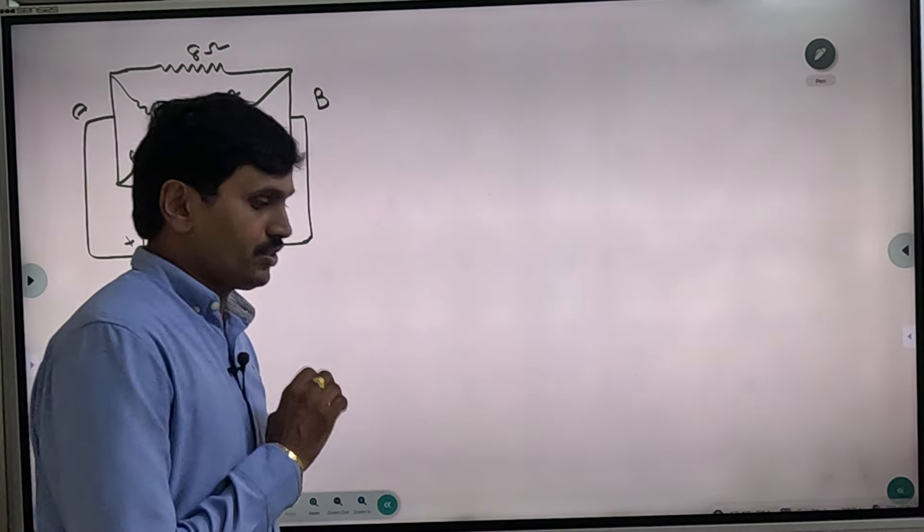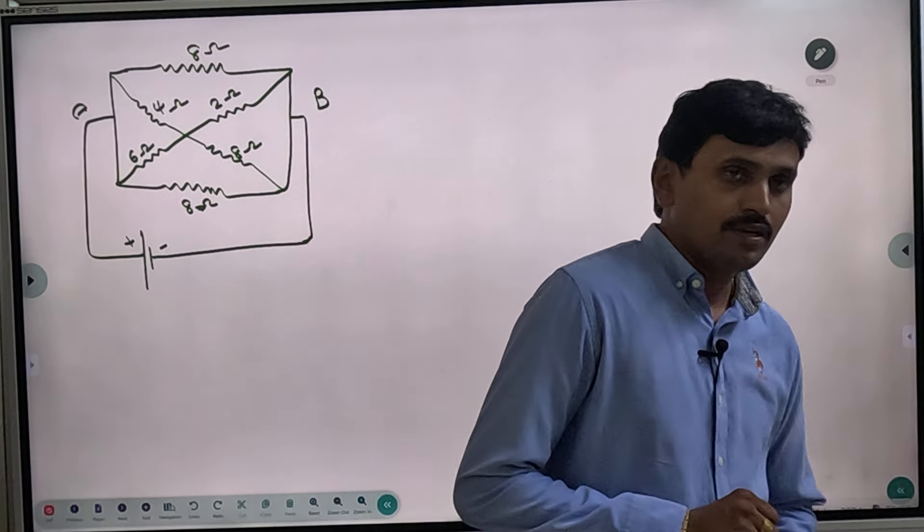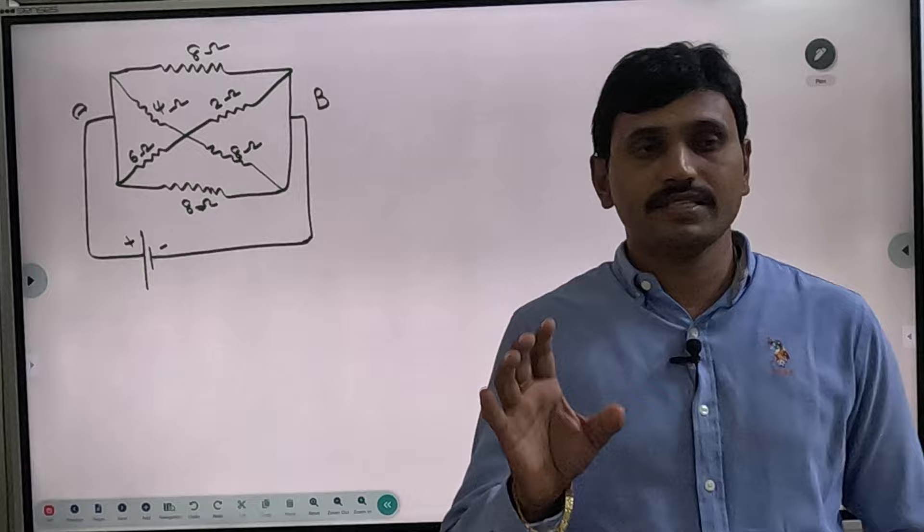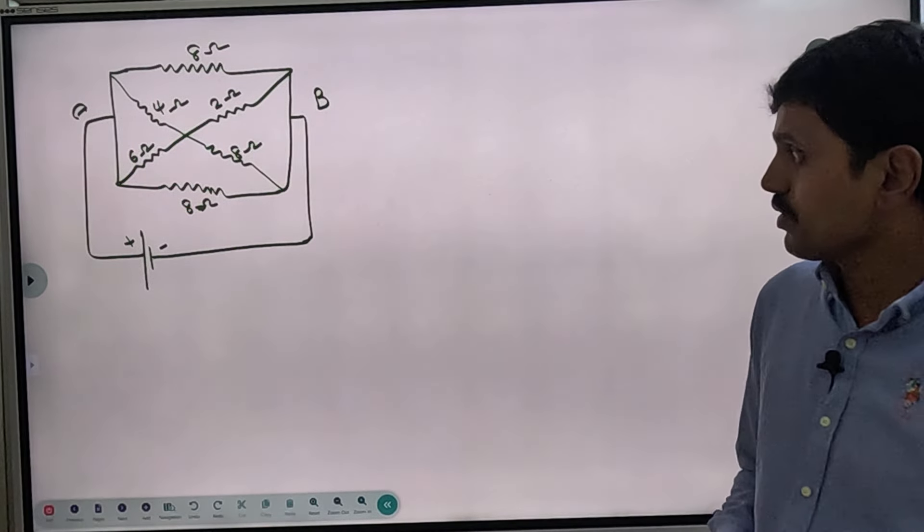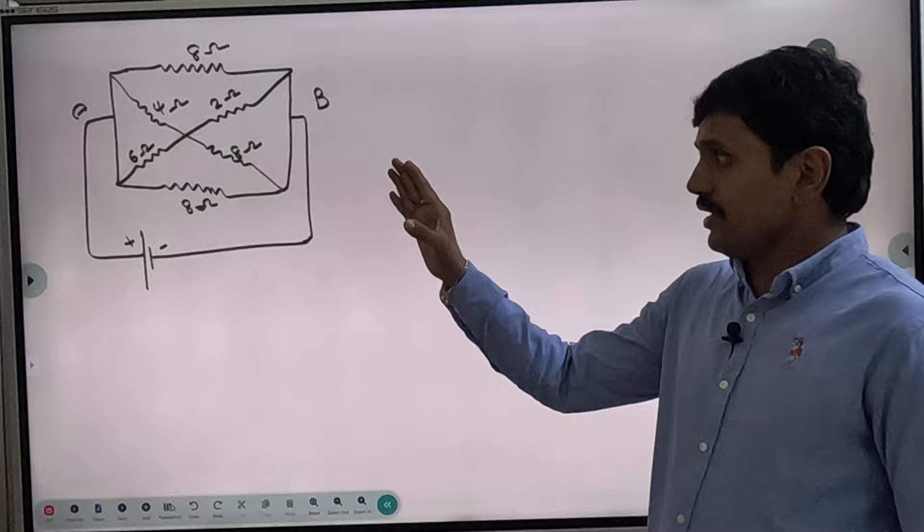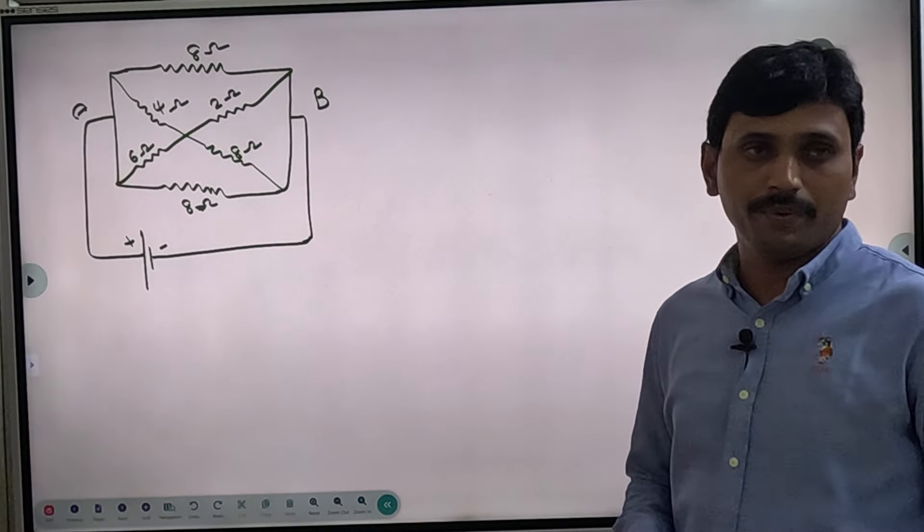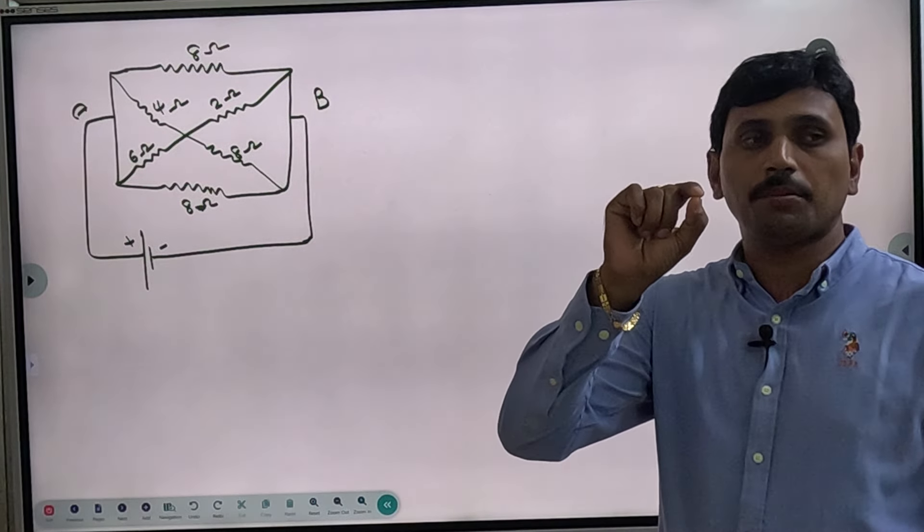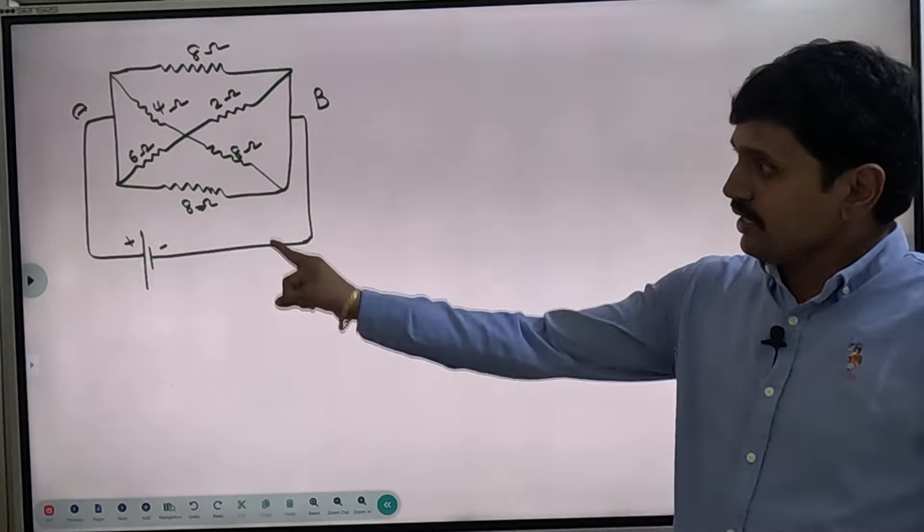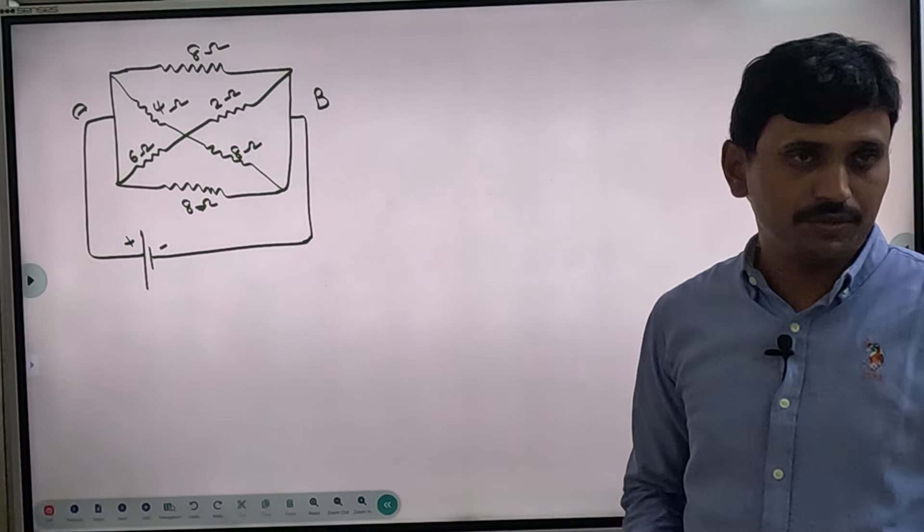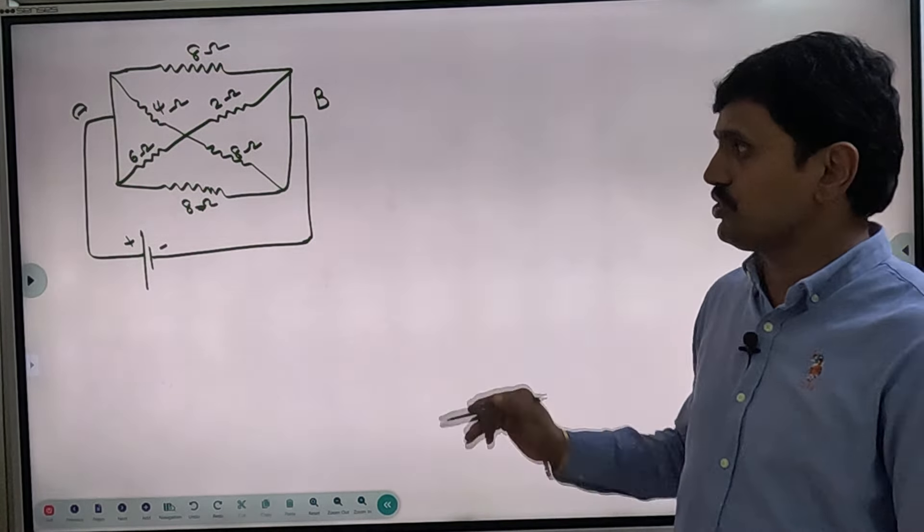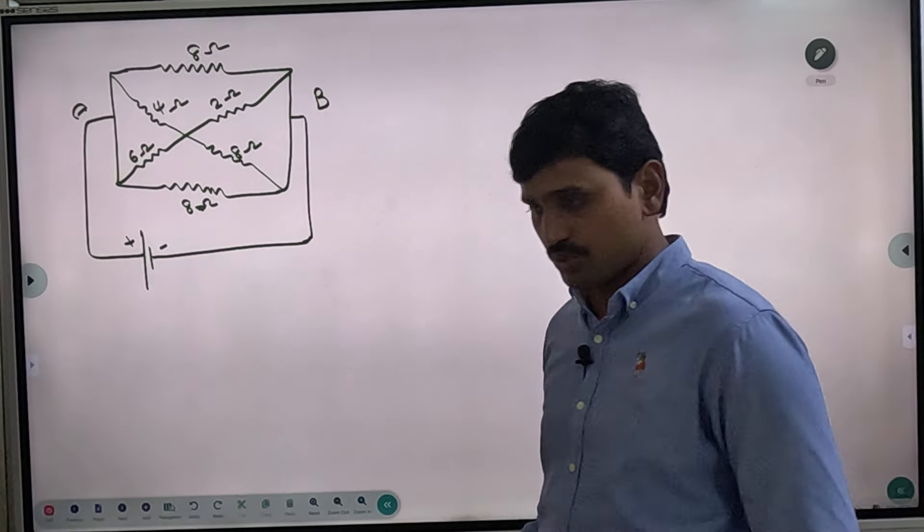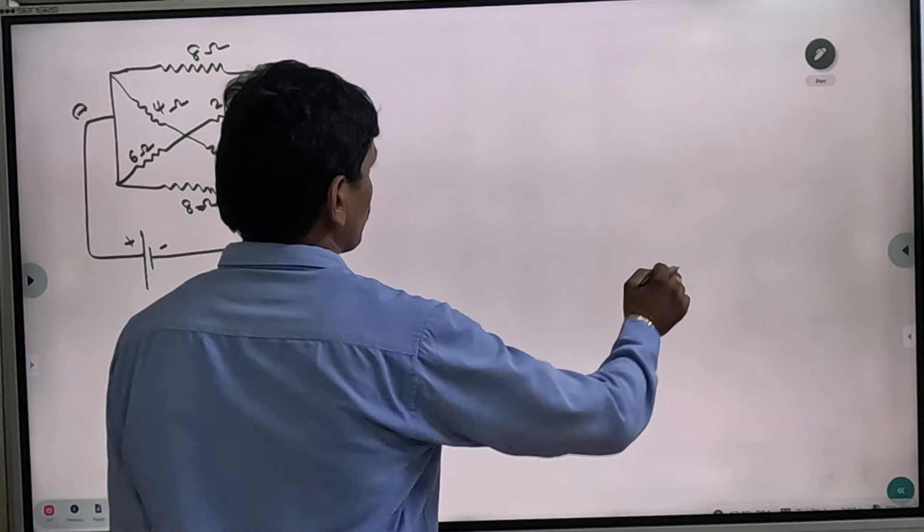In this circuit, we will find out the resultant resistance value. In this case, A and B are in between. We have a little doubt about this circuit. We will analyze the circuit to find out what it is.